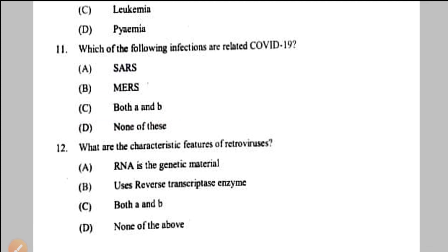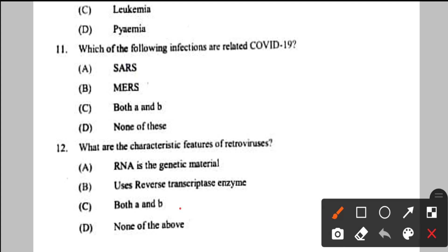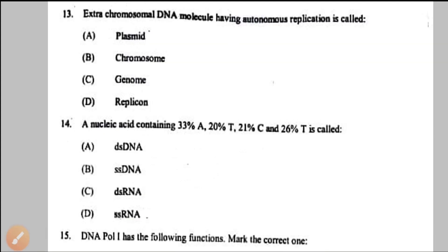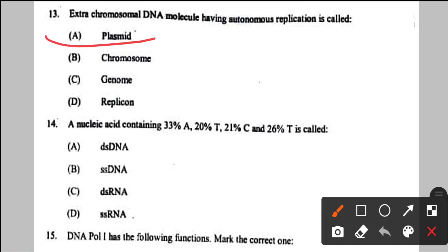Question number 12: characteristic features of retroviruses — RNA is their genetic material and they use reverse transcriptase enzyme. So option C — both A and B are correct. Question number 13: extra-chromosomal DNA molecule having autonomous replication is called a plasmid — direct definition, option A is correct.